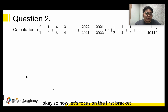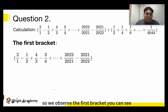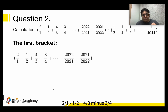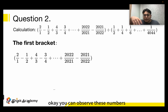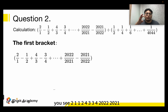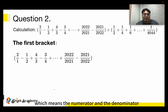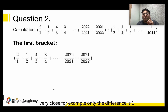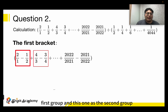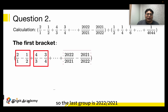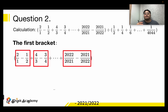Now let's focus on the first bracket. We observe: 2 over 1 minus 1 over 2, plus 4 over 3 minus 3 over 4, and so on, up to 2022 over 2021 minus 2021 over 2022. You can see the numbers 2, 1, 1, 2 and 4, 3, 3, 4 — the numerator and denominator of each fraction are very close; the difference is only 1. So we separate every two fractions as a group, with the last group being 2022 over 2021 minus 2021 over 2022.